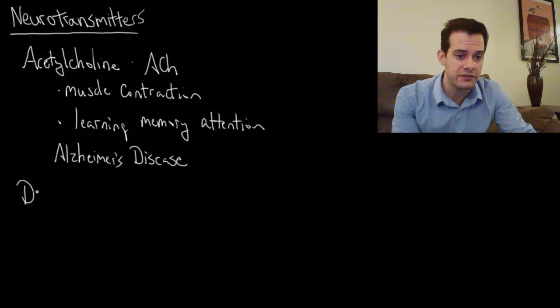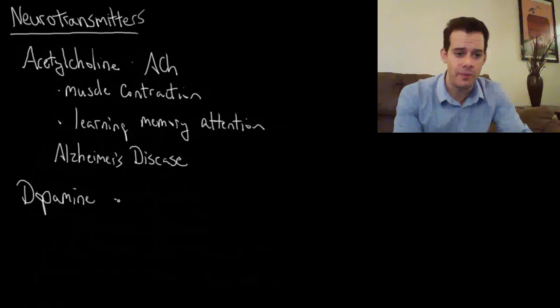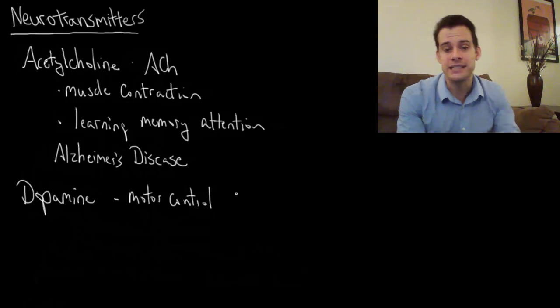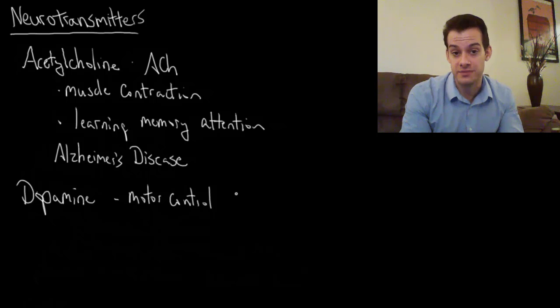The next neurotransmitter I'll talk about is one you may have heard of, and this is dopamine. One of the things that dopamine does is it's involved in motor control, control over our movement. This happens in an area of the midbrain called the substantia nigra.